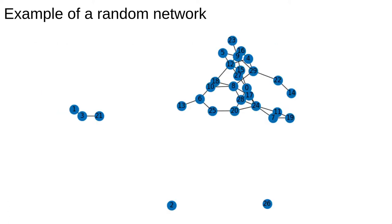This is an example of a random network generated with 30 nodes and p equals 0.1. With such a low value of p, not enough edges are constructed to connect all the nodes in the network to each other. This is an example of a disconnected network.